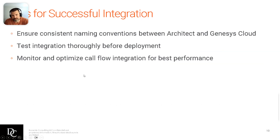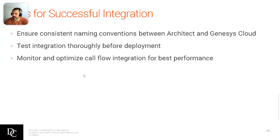Some tips for successful integration: ensure consistent naming conventions between Architect and Genesys Cloud. Test those integrations thoroughly before deployment, as always. Monitor and optimize call flow integration for best performance — that's where call logs come in. There is also good optimization and monitoring of call flow integration within Genesys Cloud, which is out of scope for this module but covered in a later module.